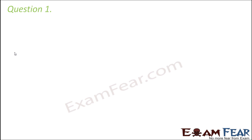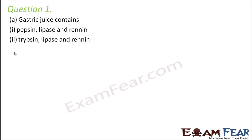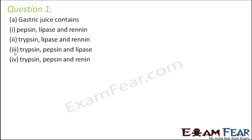Let us look at question number 1. It says: gastric juice contains pepsin, lipase and renin — or trypsin, lipase and renin — or trypsin, pepsin and lipase — or trypsin, pepsin and renin. So gastric juice is secreted from the stomach.